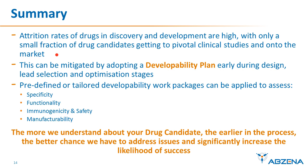In summary, there are very high attrition rates of drugs in discovery and development, with only a very small fraction getting to pivotal clinical studies and onto the market. This can be mitigated by adopting a developability plan early during design, lead selection, and optimization stages. We can create predefined or tailored developability work packages that can be applied to assess key attributes including specificity, functionality, immunogenicity and safety, and manufacturability. The more we understand about drug candidates earlier in the process, the better chance we have to address issues and significantly increase the likelihood of success.